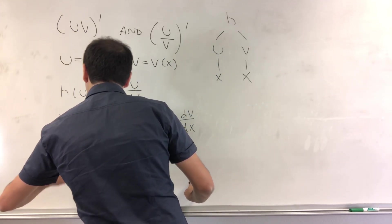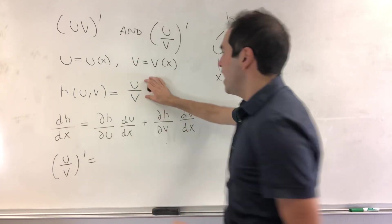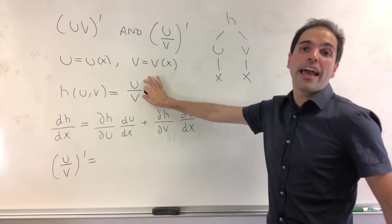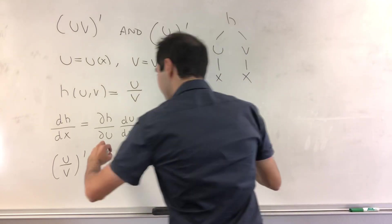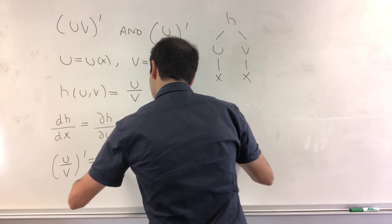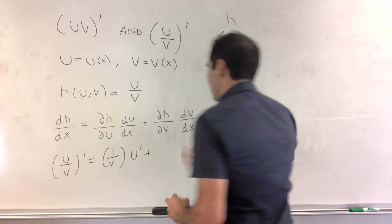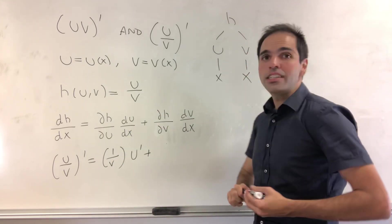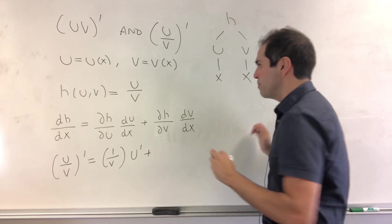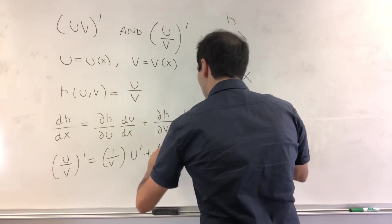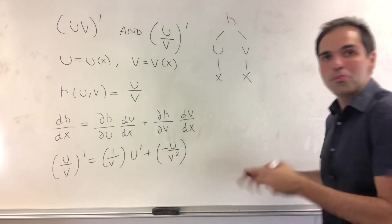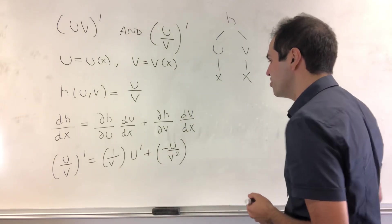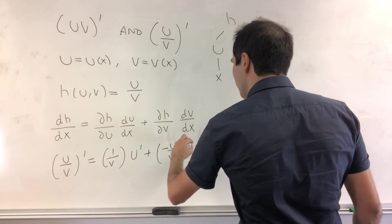Well, u over v prime, dh over du, like think x over 3, that becomes 1 over v times u prime. And then dh over dv, like think 3 over x, that becomes minus u over v squared. Almost by the power rule, I think you can also use the Chain Rule. And then times v prime.